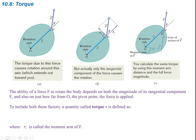Torque is going to be due to a force that causes a rotation around an axis. If you look at the image here, some random object has an axis of rotation — this axis is coming in and out of the page at this point. Somewhere on the object there is going to be a force being applied, at some angle away from the radius vector. So this force, or at least part of this force, is going to cause a rotation.